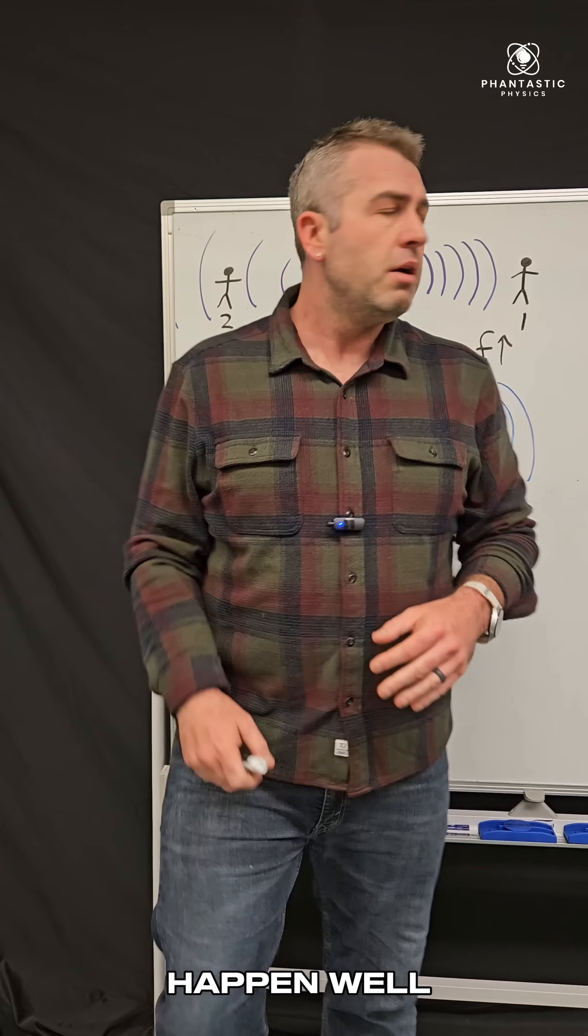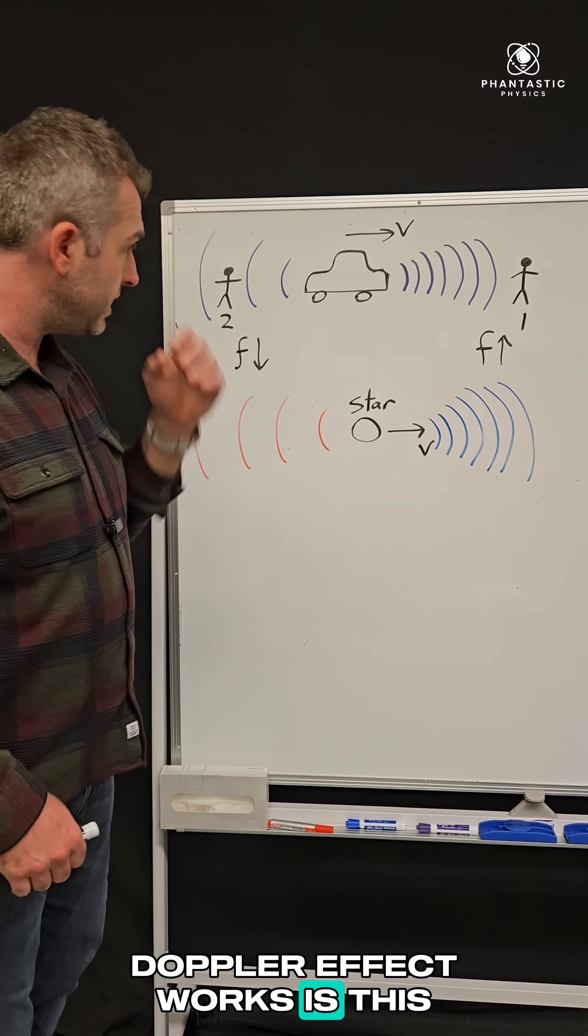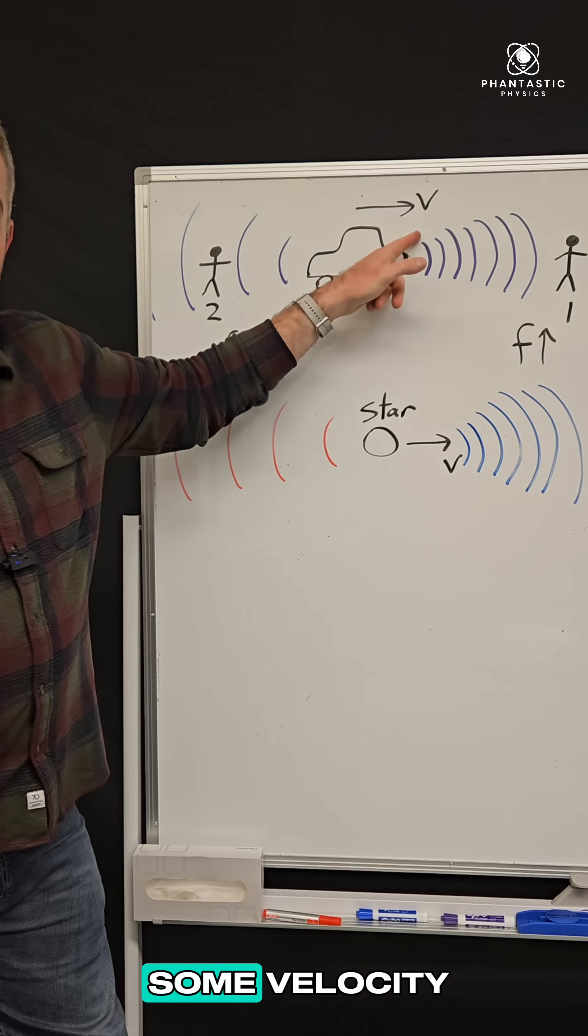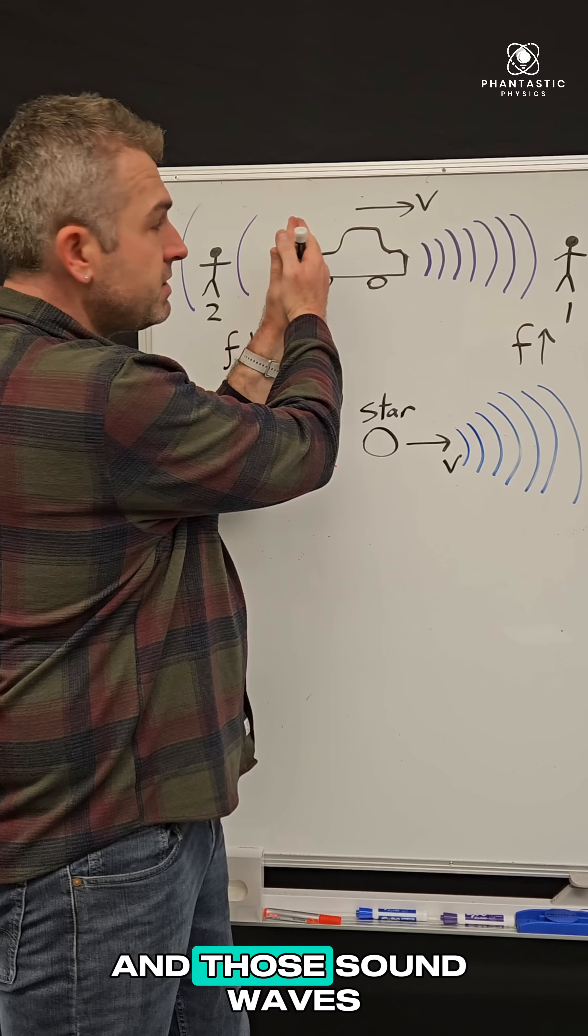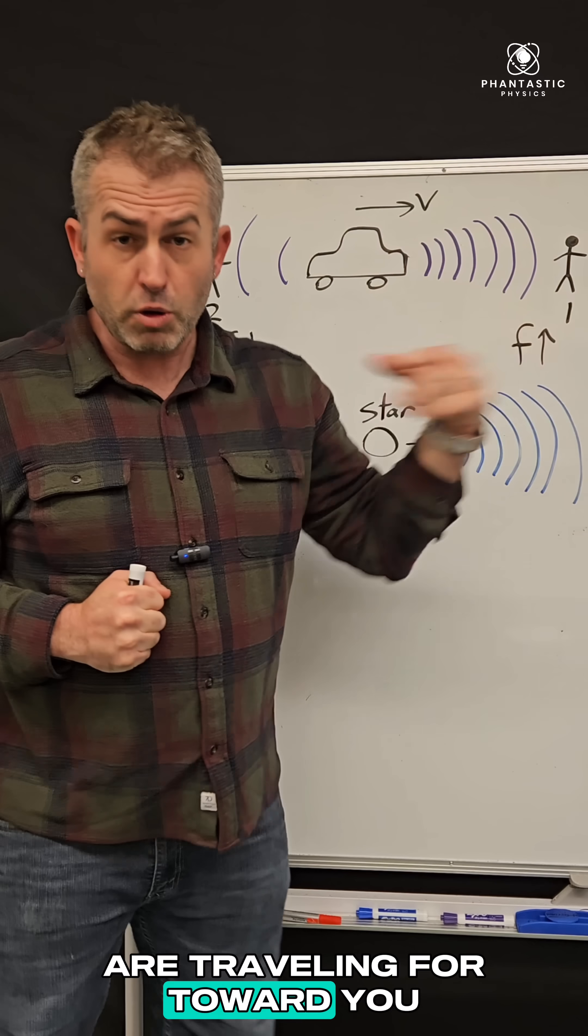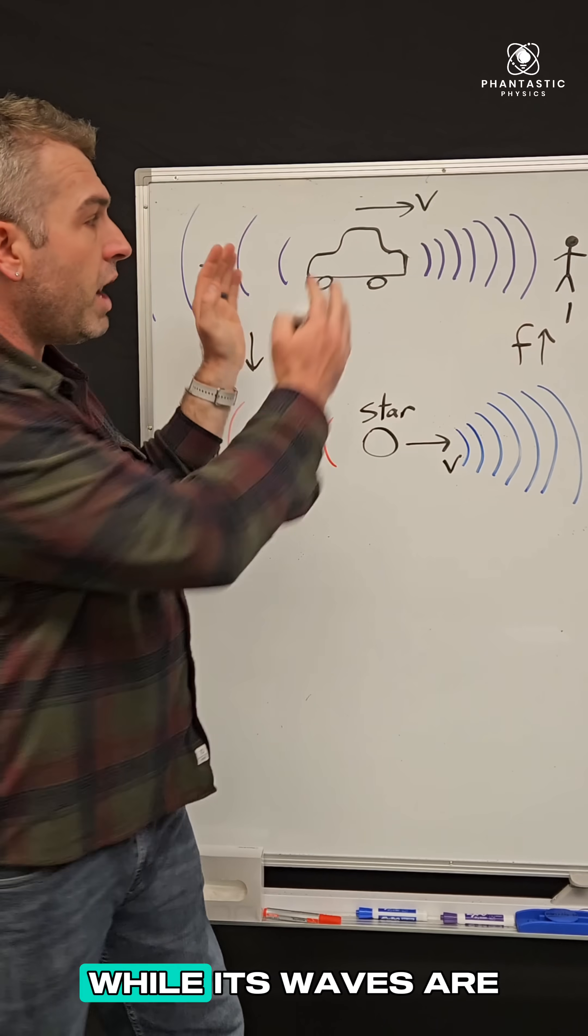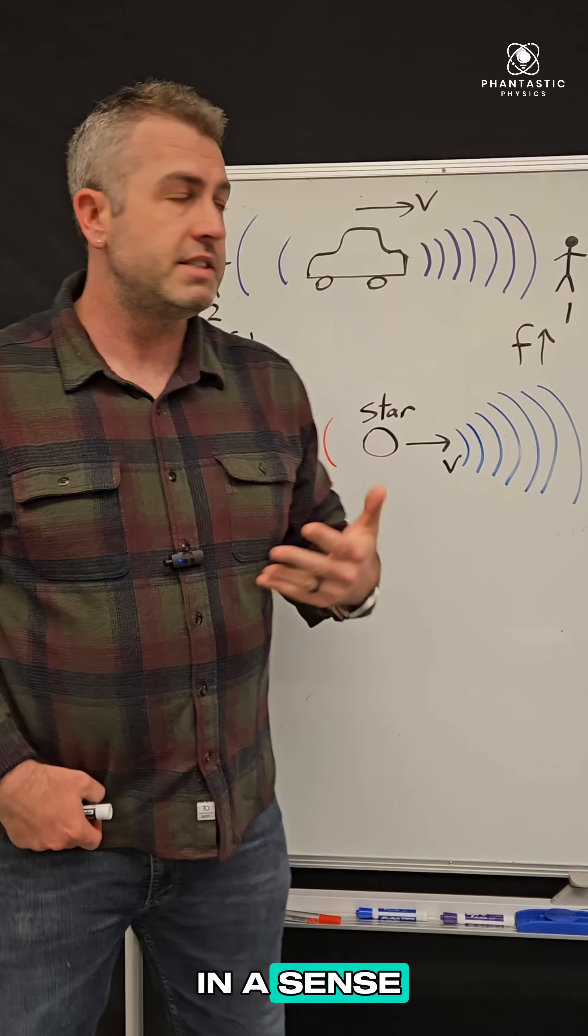So why does that happen? Well, it's something called the Doppler effect. And the way the Doppler effect works is this: if you're a person standing over here, as this car is driving towards you with some velocity, what happens is its sirens are producing sound waves and those sound waves are traveling in all directions. Some of those waves are traveling toward you, but since the car is also moving towards you while its waves are traveling towards you, it's sort of catching up with the waves in a sense.